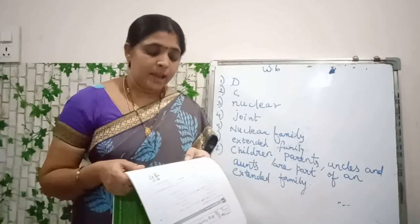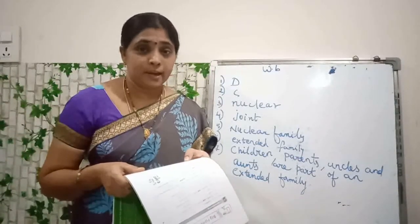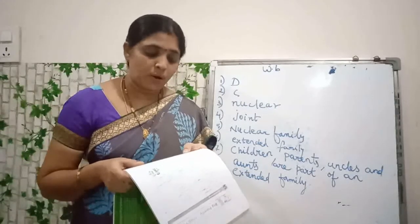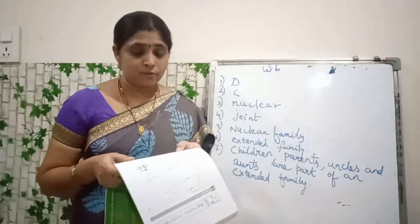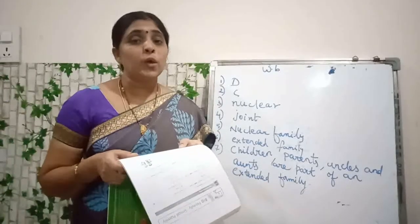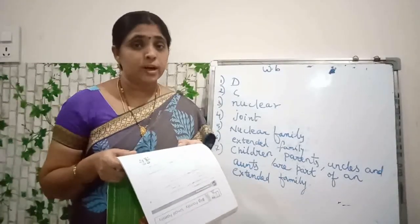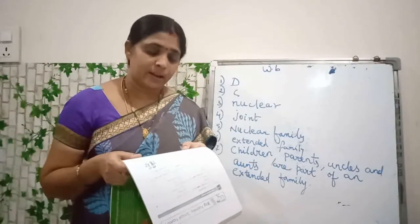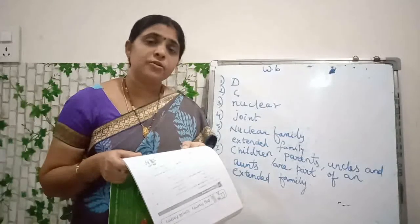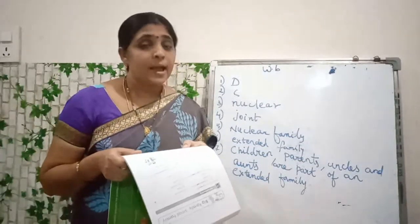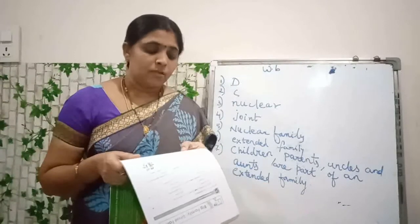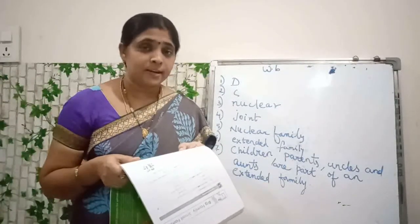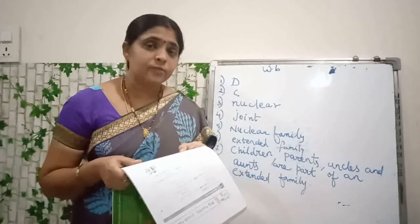Sixth one: in which type of family do we find cousins, children? Extended type of family. So, extended family is the answer.